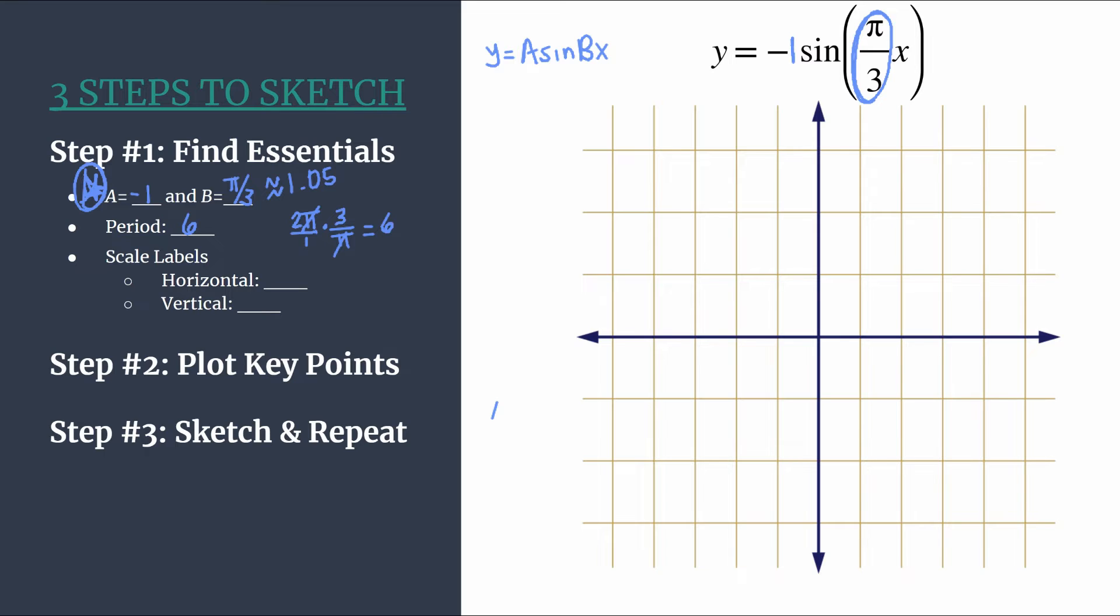Let's go ahead and get into the scale labels. It also makes the scale labels even easier. So remember with this method, we purposely choose to design our scale in a way that's advantageous to us. And we are going to take our period and divide by four to choose our horizontal scale. So let's do that. We have six divided by four. That reduces to three over two. So we'll be counting by three halves.